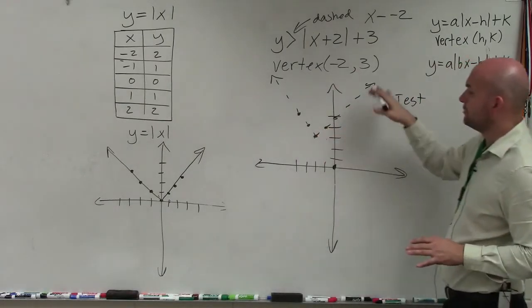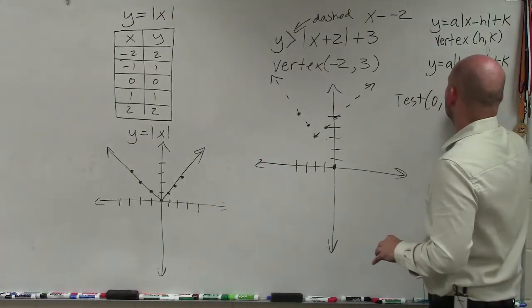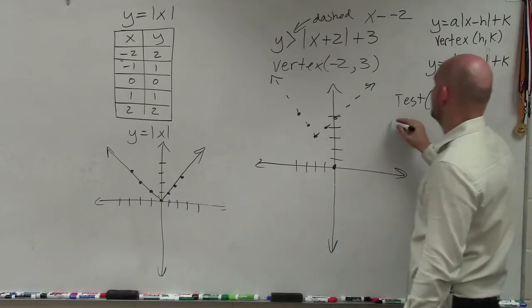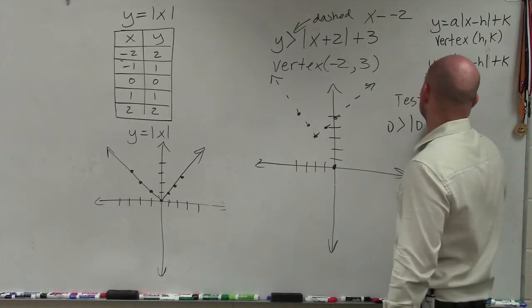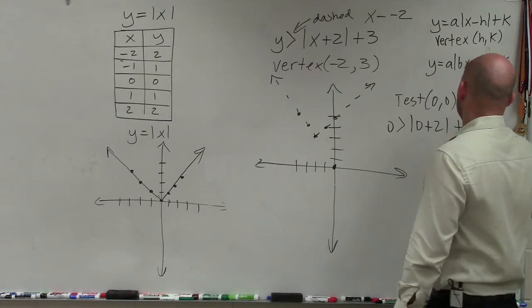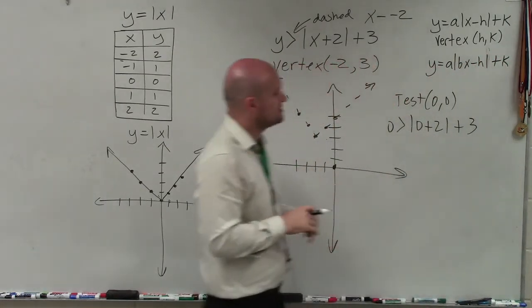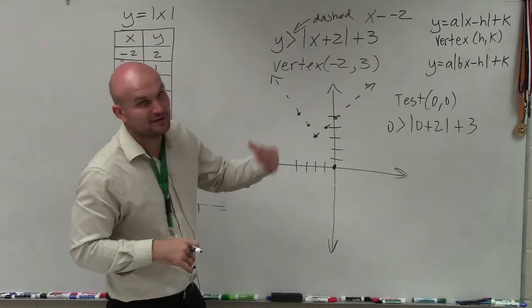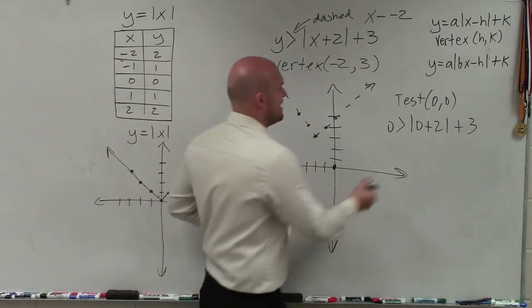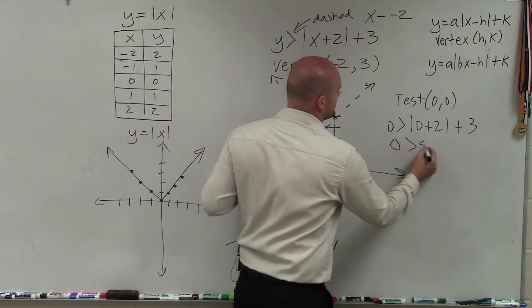To test (0, 0), you just plug in 0 for x and 0 for y. What I have here is 0 > |0 + 2| + 3. So 0 + 2 is 2. Absolute value of 2 is 2. 2 + 3 is 5. In this case, I have 0 > 5.